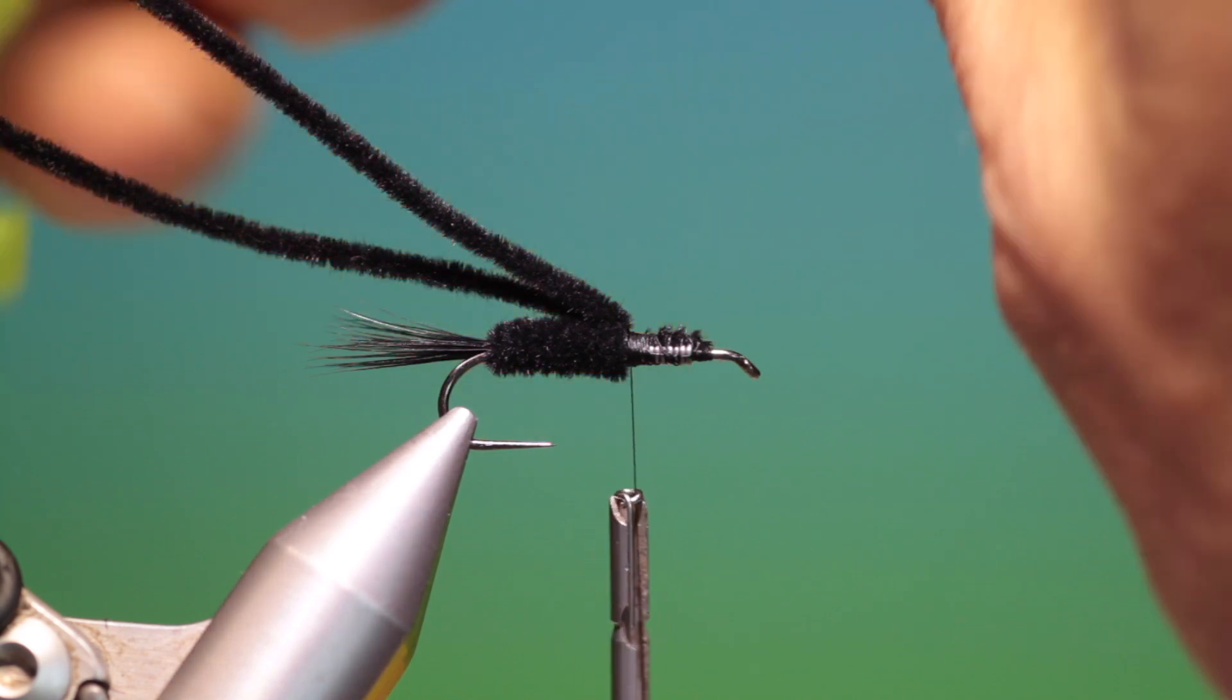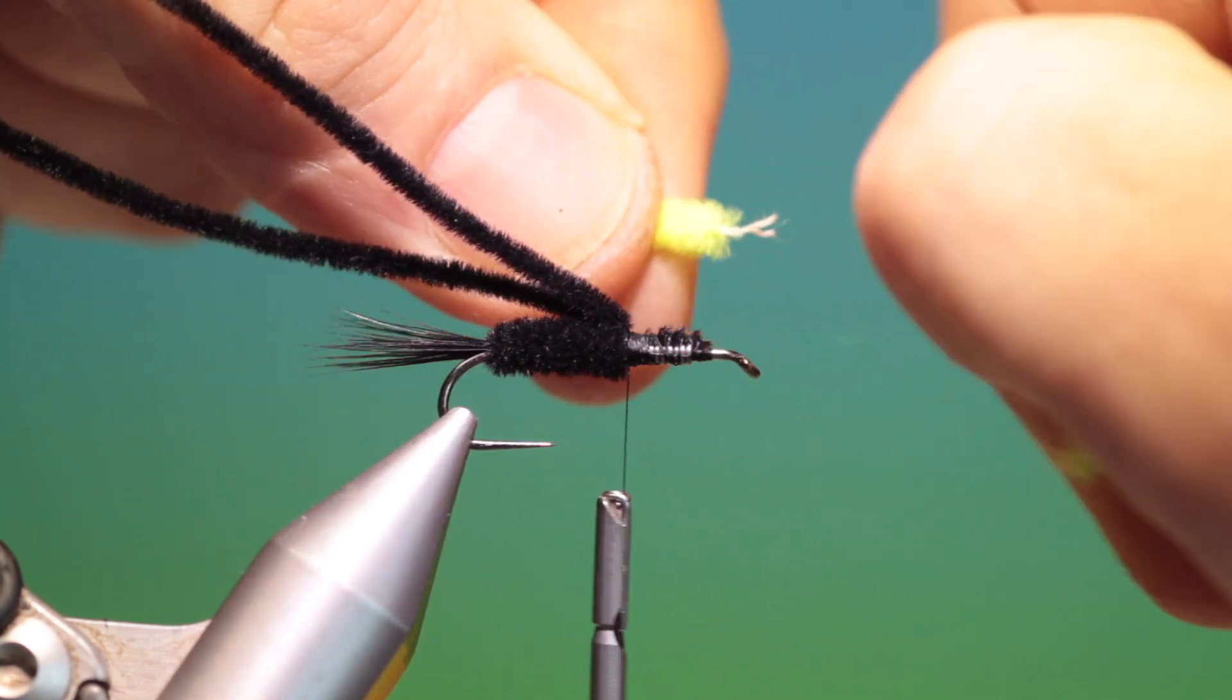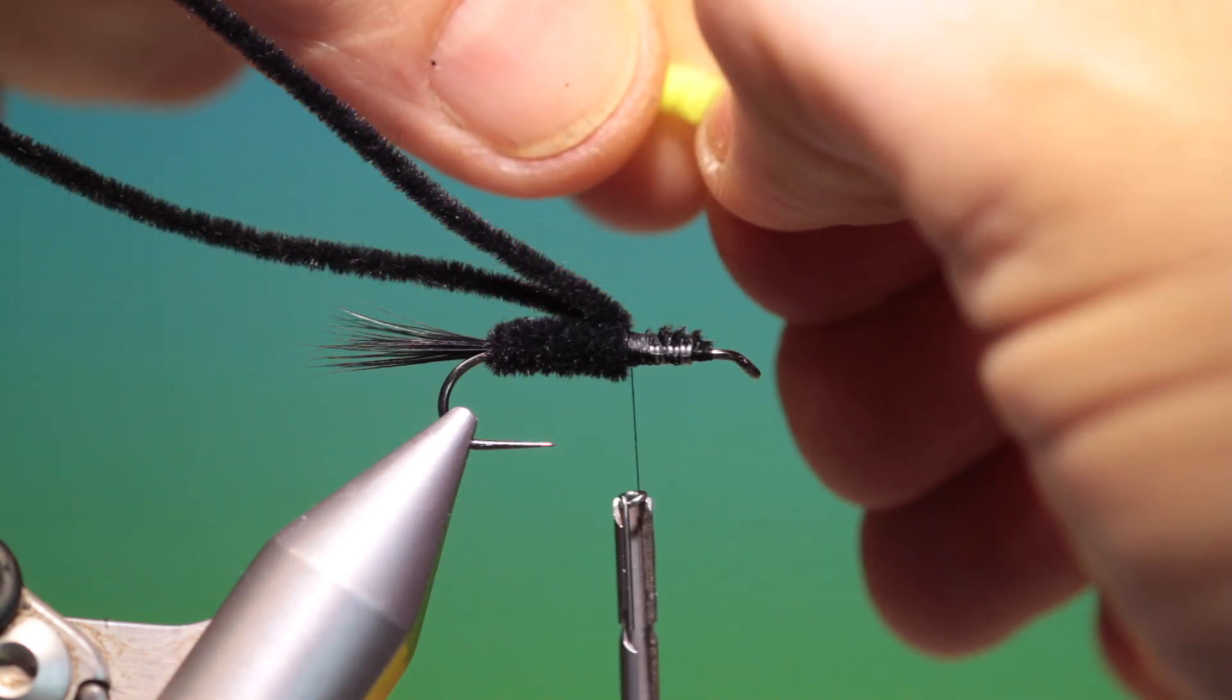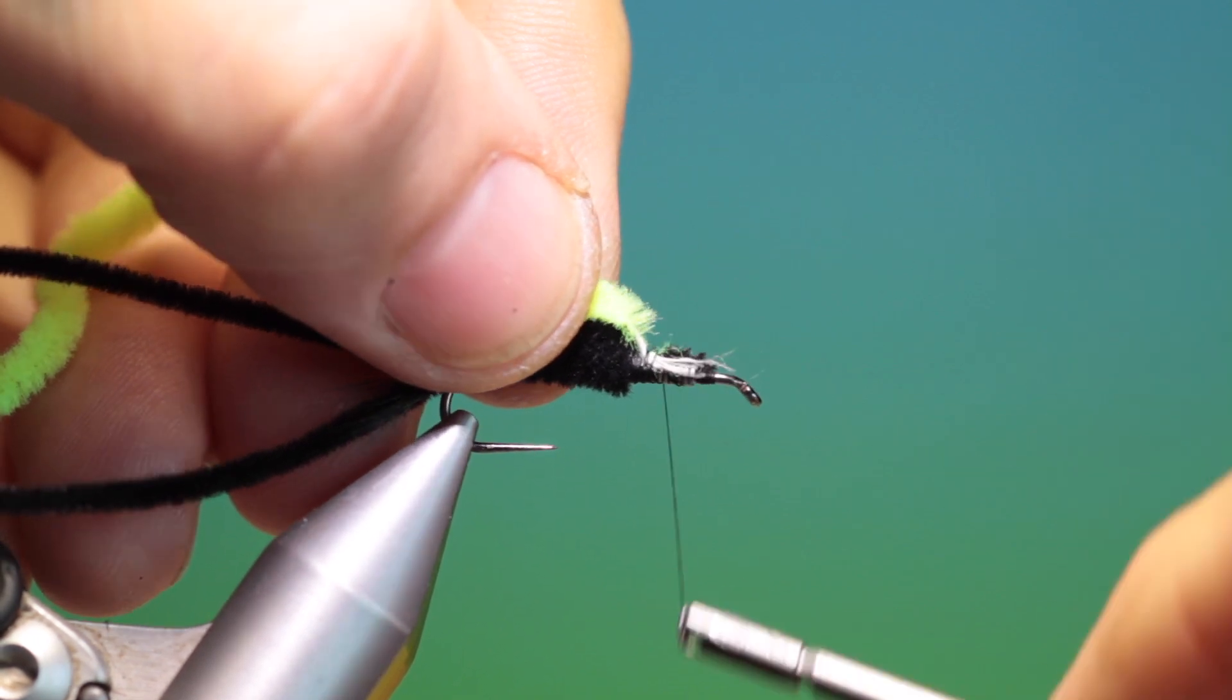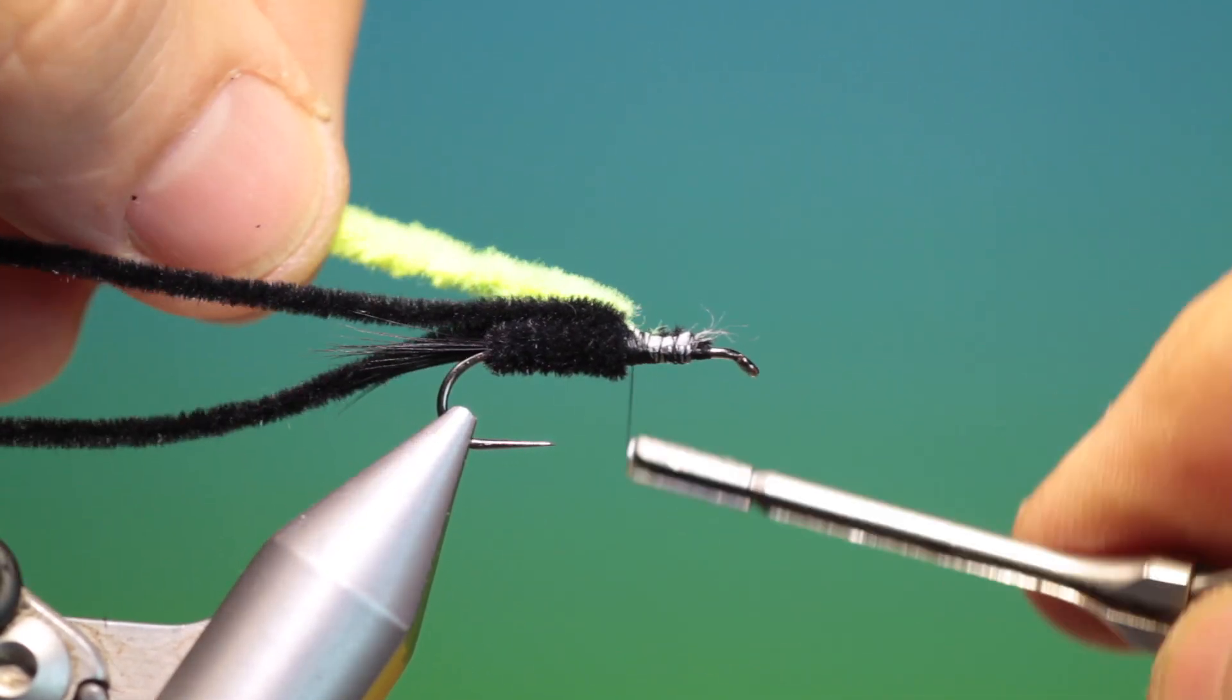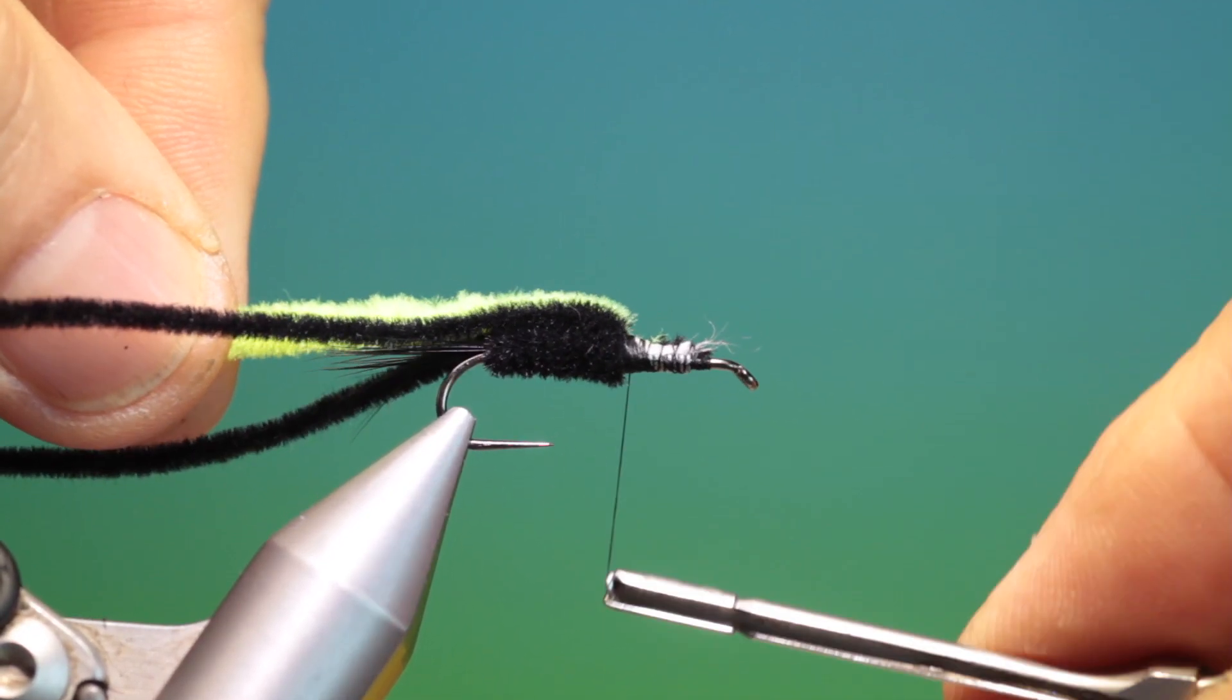Then we need some fluorescent green chenille. What we do here is we just strip off the outer fibers so we reveal the core and we just tie the core in on top like that, again into the abdomen.